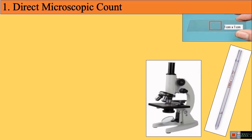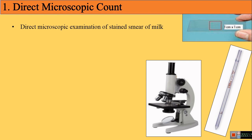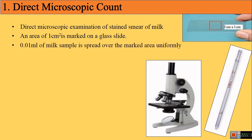The first method is DMC, i.e., Direct Microscopic Count. This method consists of direct microscopic examination of a smear of milk sample. A specific area of 1 cm² is first marked on a glass slide, and a specific amount of milk sample — 0.01 ml — is spread over that area uniformly.